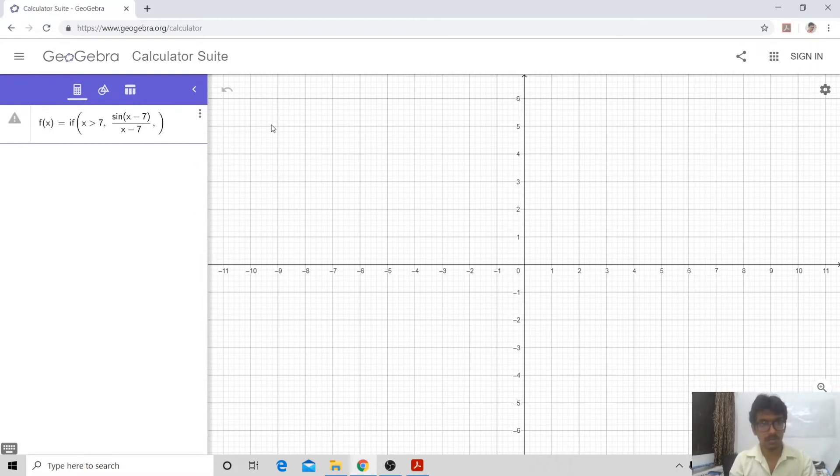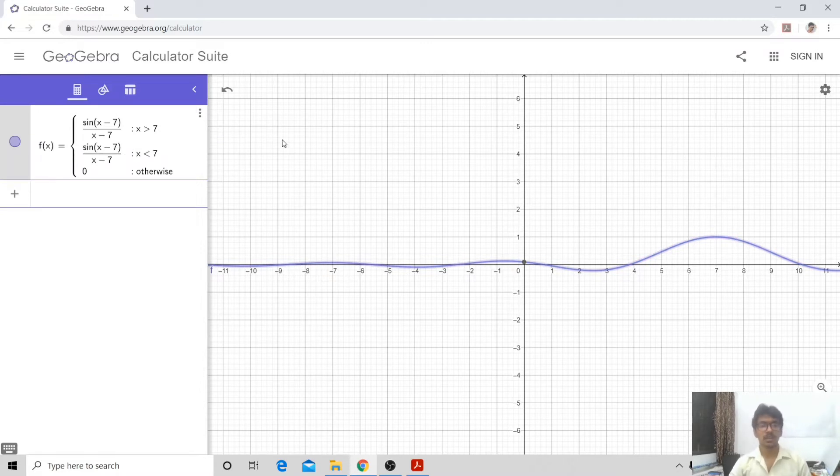If this condition is satisfied, this is the value. And again, if x bigger than 7, then I am going to have the same. There also I have specified x bigger than 7, so this must be x smaller than 7. We must have this and when these two conditions are not there, that is when x is 7, we must have 0.